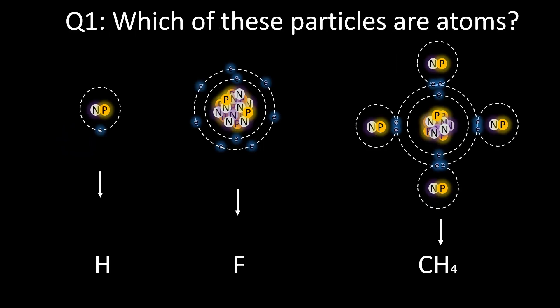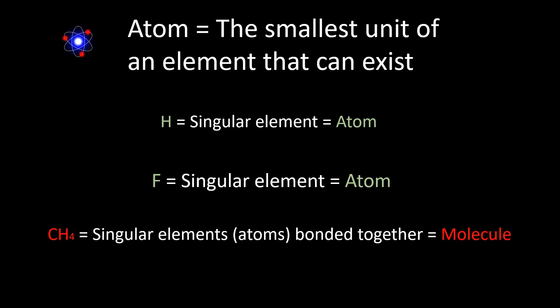Question 1: Which of these particles is an atom? Hydrogen and fluorine are atoms, while methane is not an atom but a molecule. Remember, an atom is the smallest unit of an element that can exist. Hydrogen and fluorine represent singular elements, while methane is an atom bonded to other atoms or elements, forming a molecule.